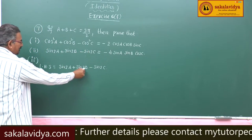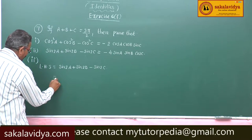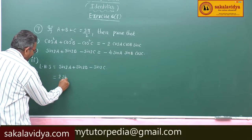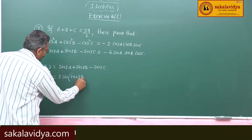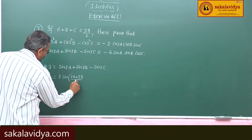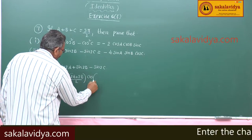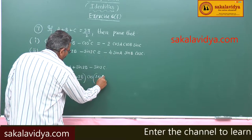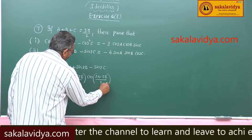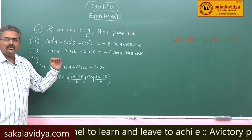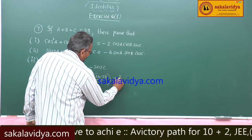Now, this is sin c plus sin d form. So we write 2 sin of (2a plus 2b)/2 times cos of (2a minus 2b)/2, and minus sin2c is nothing but 2 sin c cos c.